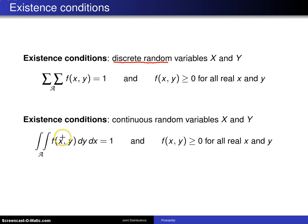For the joint probability density function, that is for continuous random variables X and Y, the existence conditions are the double integral of the joint probability density function must be one, and f of XY must be greater than or equal to zero for all real values of X and Y.